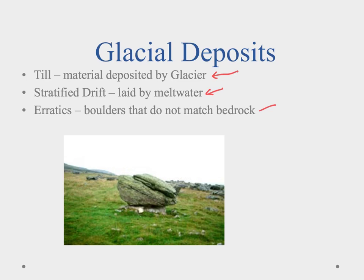Finally, we have erratics — these are large boulders that don't match where they're found. They can range from a small boulder size to larger than a house. They are picked up by a glacier, traveled thousands of kilometers, and deposited in the middle of fields and places where they don't match the surrounding rock around them.